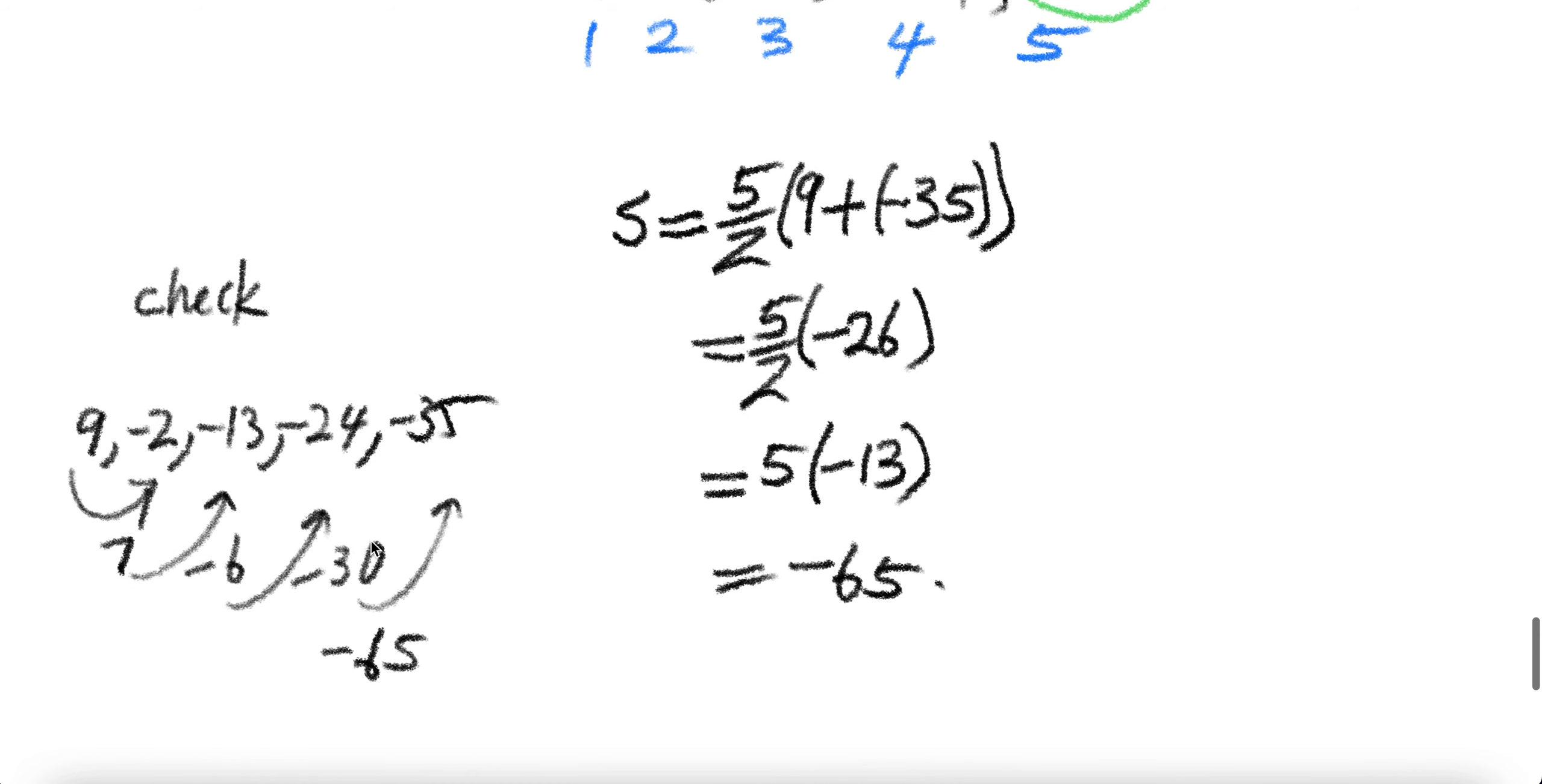Let us check by hand. If you are given this, add this, you get 7. Add 7 and minus 13, you get minus 6. Minus 6 and minus 24, minus 30. Minus 30 and minus 35, we get minus 65, which is the sum of that.